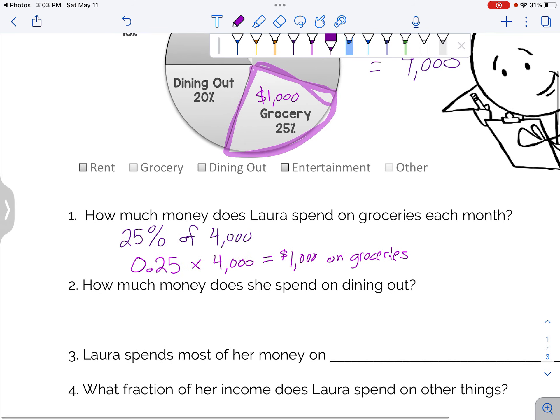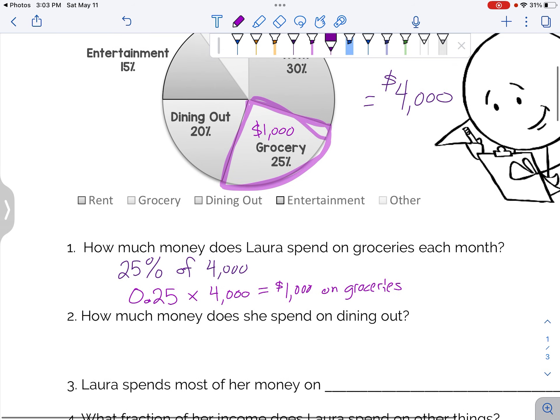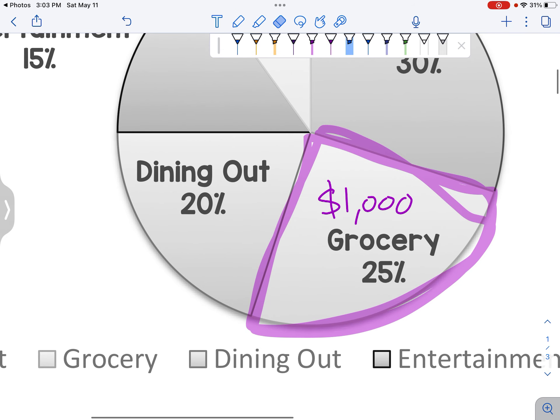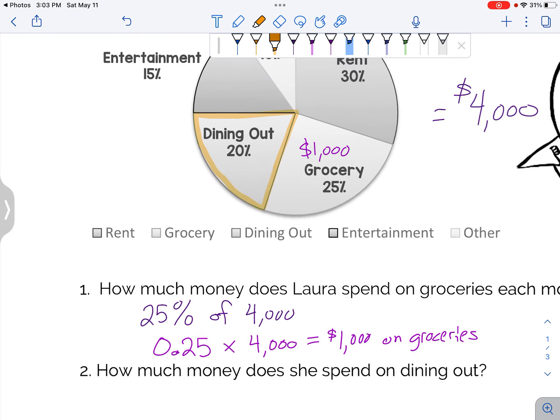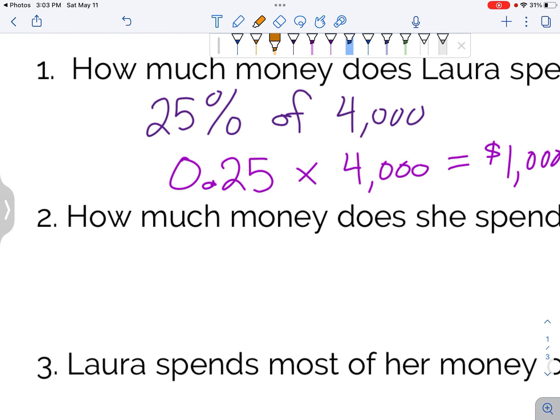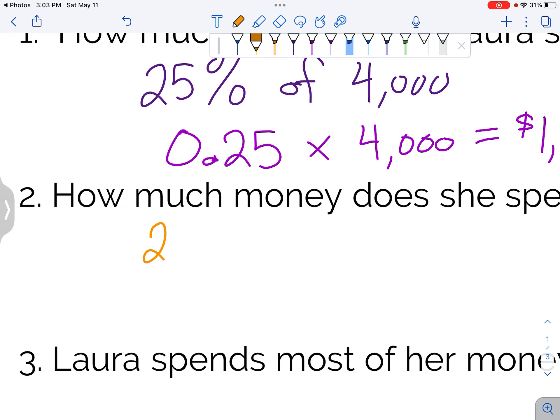How much does she spend on dining out? So dining out is here. So that's 20%. She's still got the same amount of total money. So now it's 20% of $4,000.